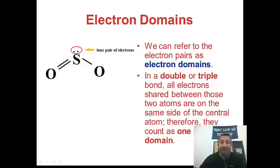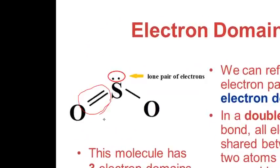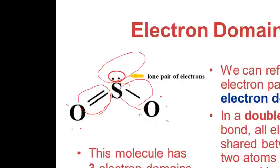Count and see how many electron domains are in SO2 in the structure drawn here. Hopefully you selected three. This molecule has three electron domains around the central atom. There's a double bond — that's one electron domain. There's a lone pair — that's the second electron domain. And there's a single bond — that's the third electron domain. There are also lone pairs on the oxygens not shown here: two lone pairs on the double-bond oxygen, and then six electrons around the single-bond oxygen.